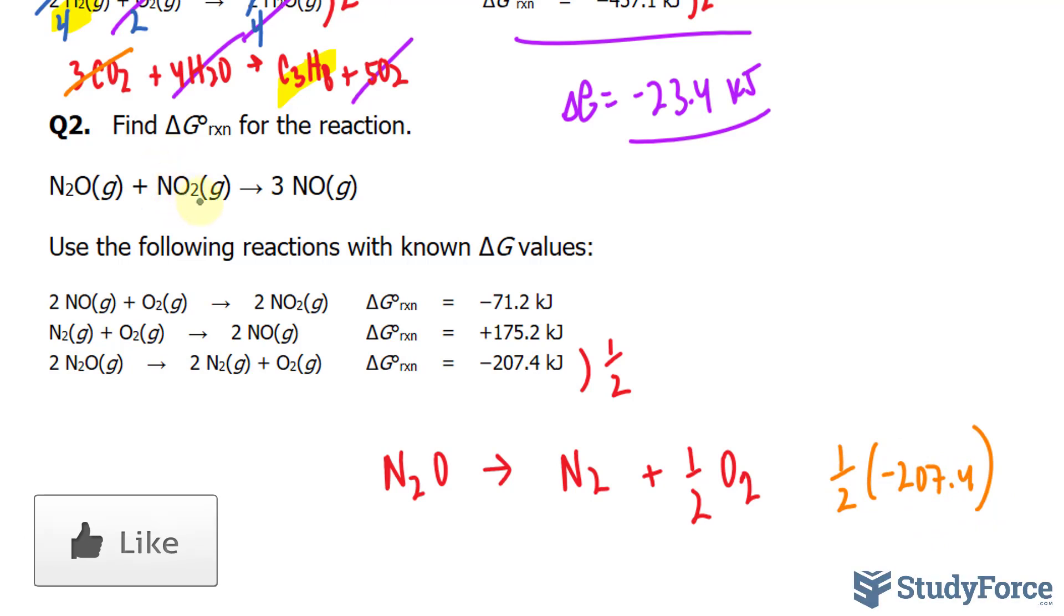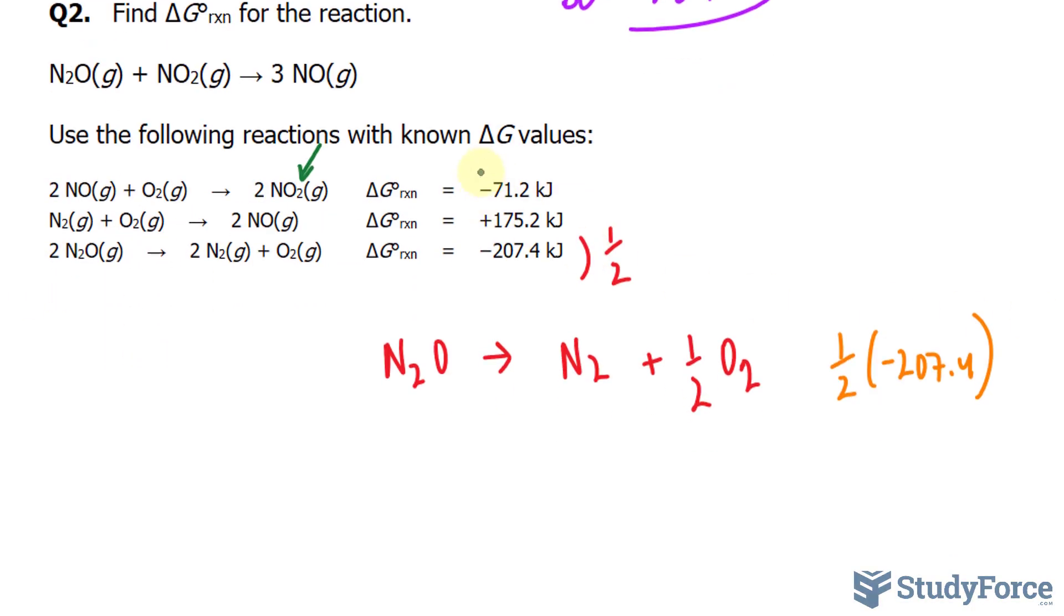Next, N2O is found right here and that's the only location that it's found. Over here it's a product and over here it's a reactant. So I'm going to flip this equation around. If you flip an equation around, you change the sign.